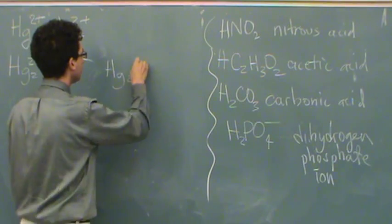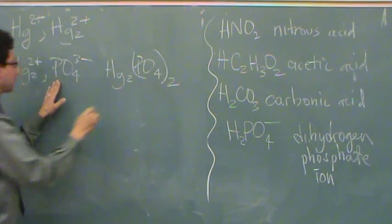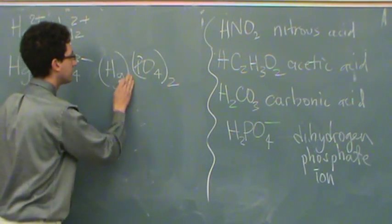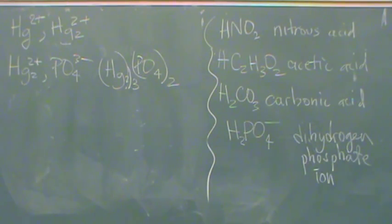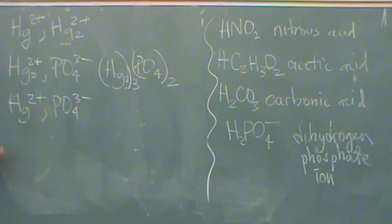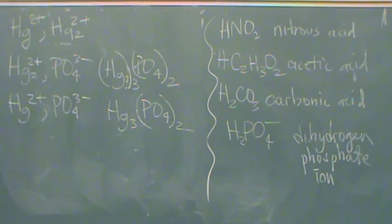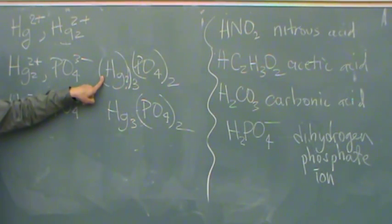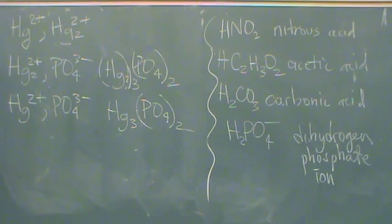Mercury 1 phosphate would be Hg2(PO4) — and I need two PO4s, so I need three of these dimers. This 2 needs to be on the inside. If I said Mercury 2 phosphate, Mercury 2 is Hg2+ with a phosphate. Now I balance it out: Hg3(PO4)2. Mercury 1 is also called mercurous phosphate, and this one would be called mercuric phosphate. -ic for the higher charge, -ous for the lower charge.